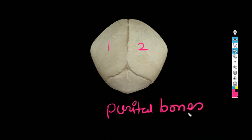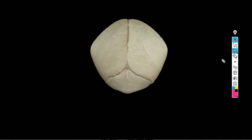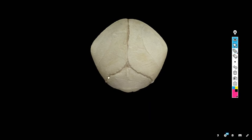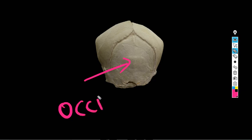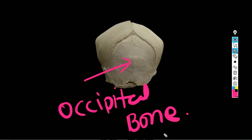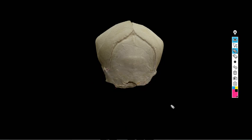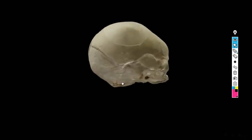And if you see this one posteriorly and inferiorly, this bone is the occipital bone. Okay, you have seen four bones. Now let's talk about the sutures.